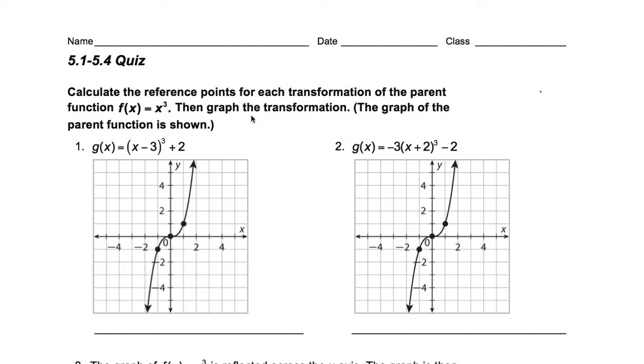So in this first one, when you graph the transformation, remember that in a cubic, your ordered pairs are negative 1, negative 1, then 0, 0, and 1, 1.